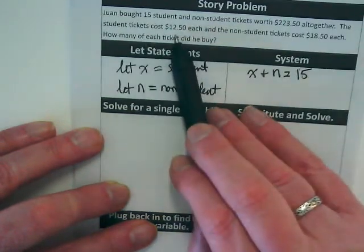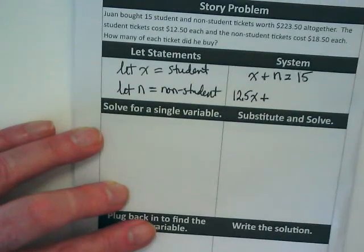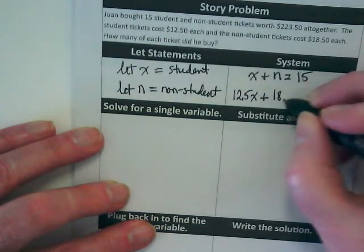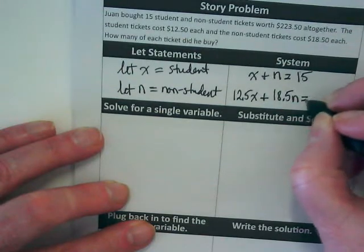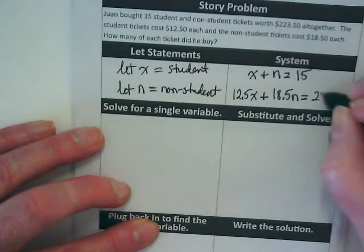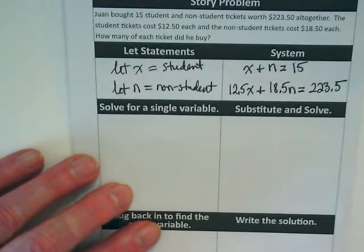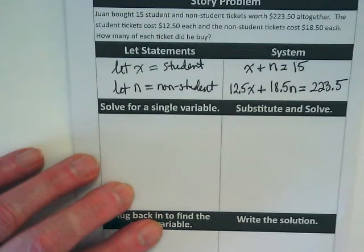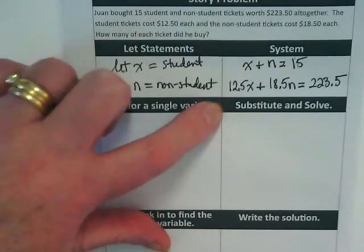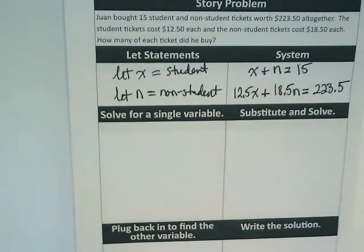And then, we know that student tickets are $12.50 and non-student tickets are $18.50. Money is in this one. So, what am I going to equal on this? $223.50. Now, these are both in standard form again. Elimination is not the way to go. I would have to turn this into negative 12.5X to eliminate the X term. I don't want to be multiplying by decimals. It's going to get messy. The easiest way to solve this is with substitution.